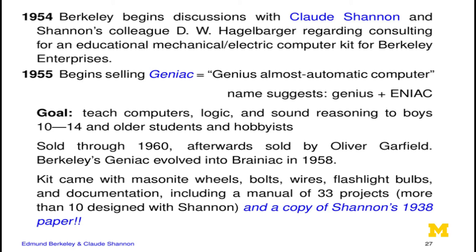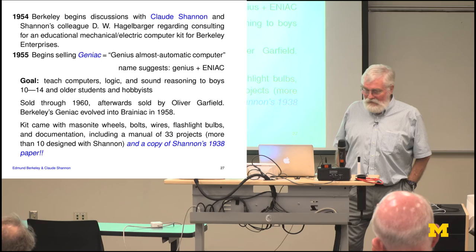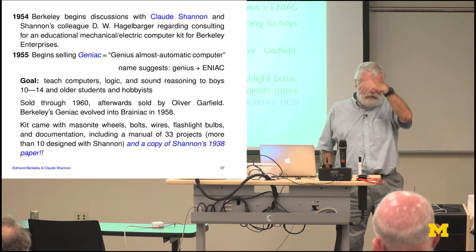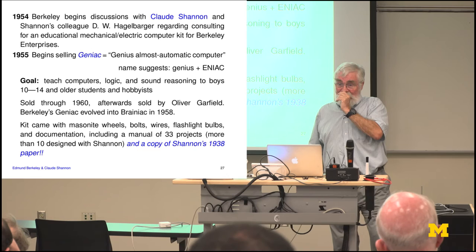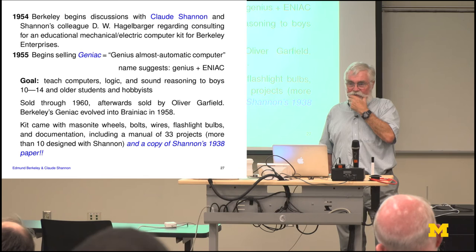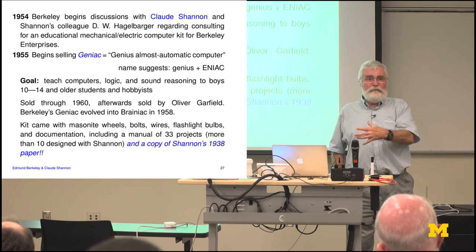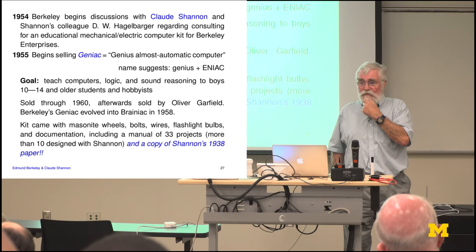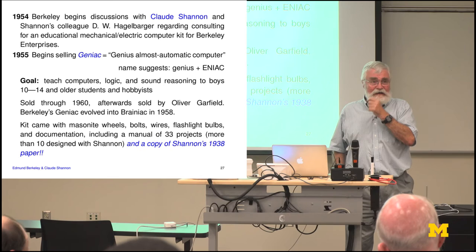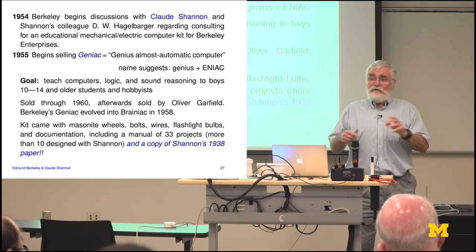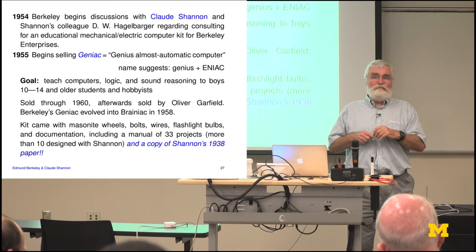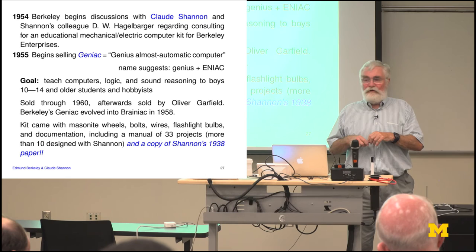In 1954, Berkeley started talking with Claude Shannon about the possibility of making small computers. Shannon had actually done some work with Hagelbarge to develop something like a digital signal processing lab for MIT, but he started consulting for Berkeley. When I gave a five-minute version of this talk at the unveiling of the Gaylord Shannon statue and mentioned Berkeley's name and Geniac, Betty Shannon lit up like a Christmas tree — and that's really the origin of this talk. She remembered Berkeley hounding Shannon for how to take his ideas and actually build a small computer that hobbyists could build at home.